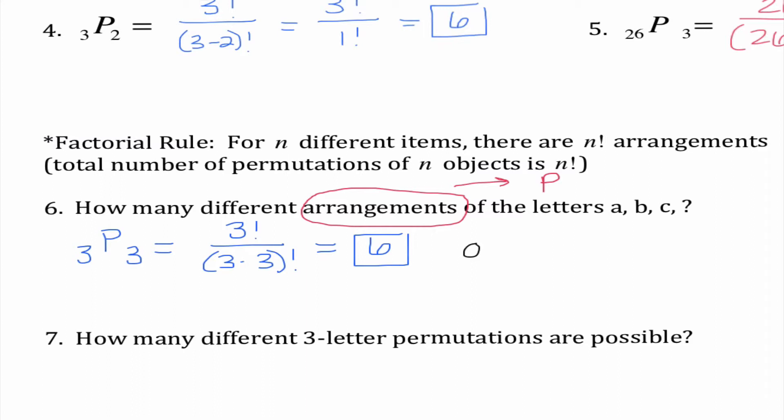The other way I could do it, if I'm arranging all three of these our factorial rule is telling me that I could just say 3 factorial to find our answer. So this would be 6.